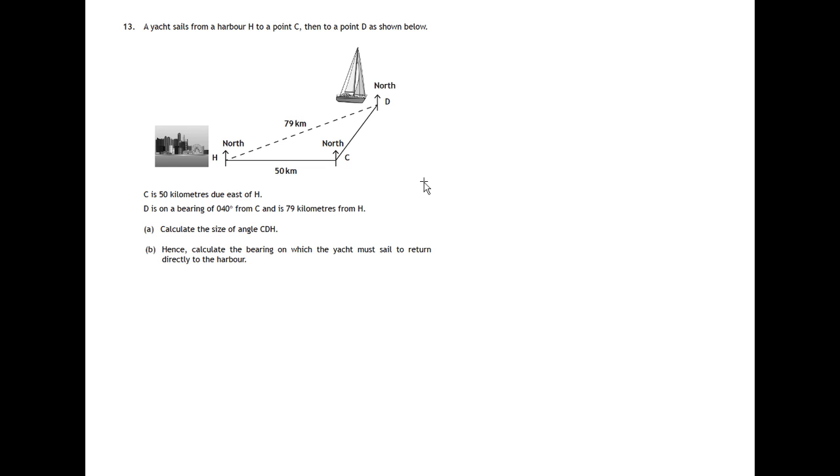This is question 13, paper 2 from the SQA Specimen Paper for National 5 Mathematics. We've got a yacht sailing from a harbour. It goes due east to sea and then on a bearing of 40 degrees it travels up to D, and there's various lengths given to us. We're asked to calculate the size of angle CDH which is this angle way up here.